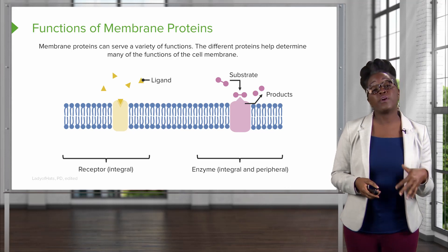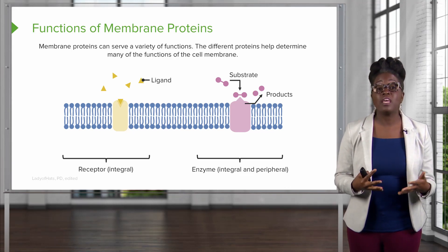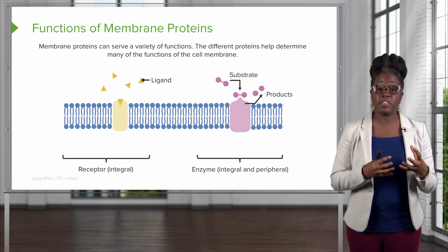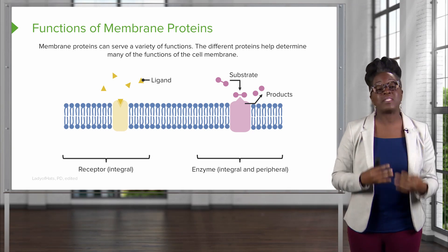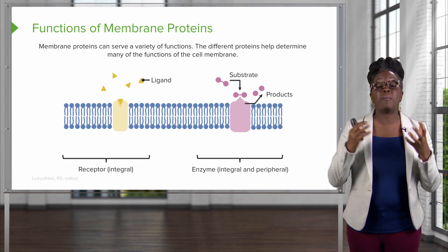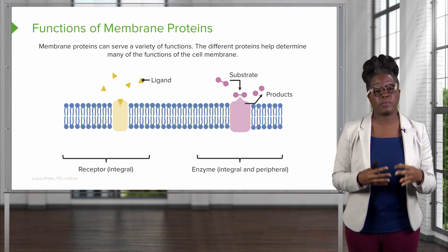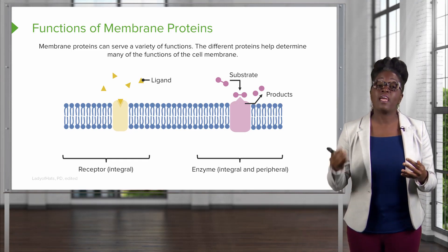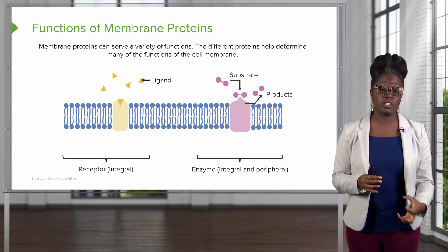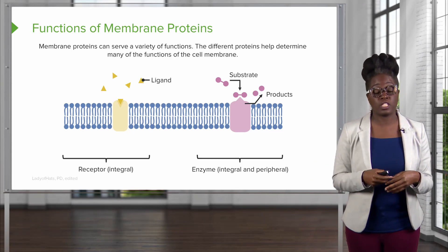A third function of our membrane proteins are receptor proteins. These receptor proteins are going to do different things depending on what happens after whatever is being received binds to the receptor. The chemical that binds the receptor is referred to as a ligand, and these ligands bind to the receptor and either are brought into the cell or sometimes they may trigger other reactions to occur.